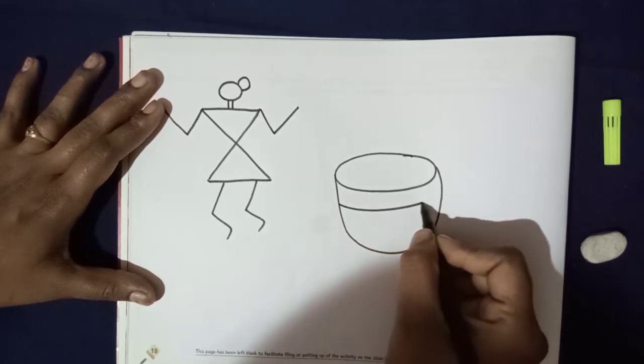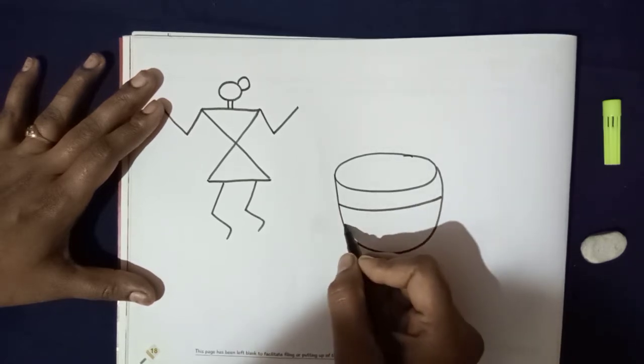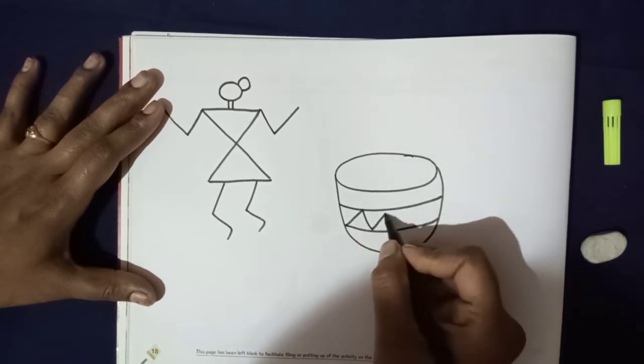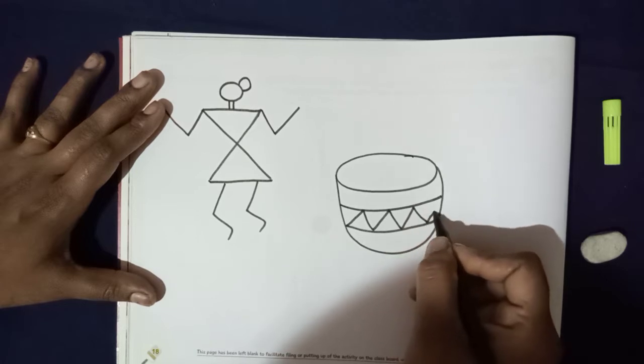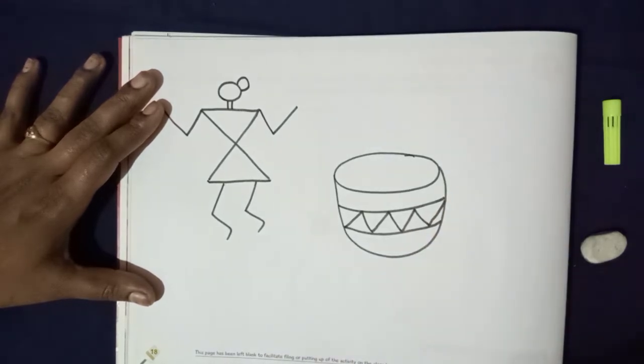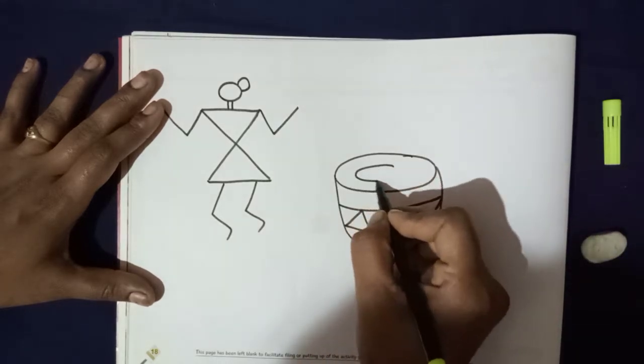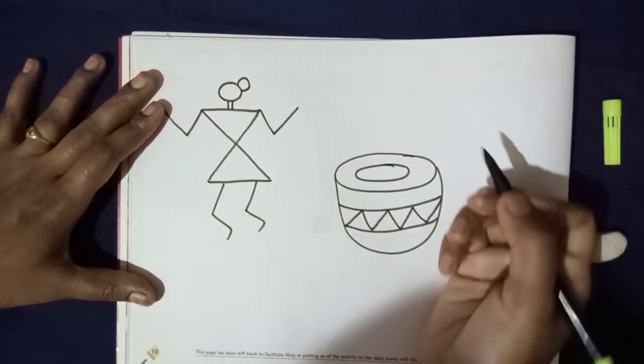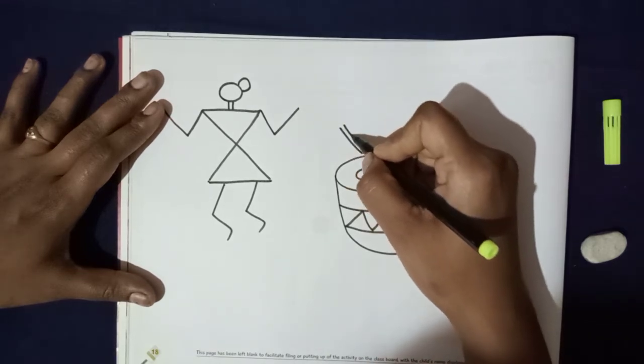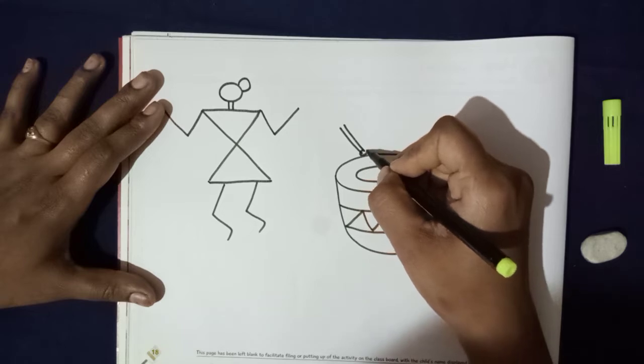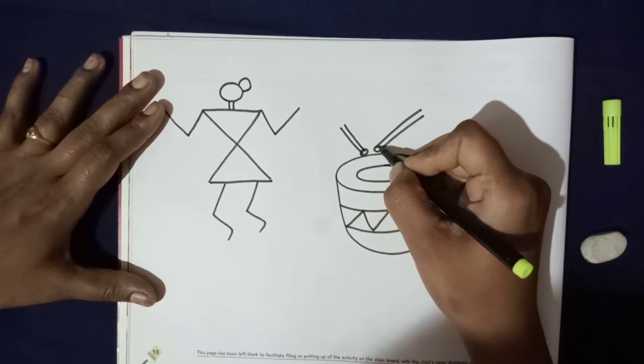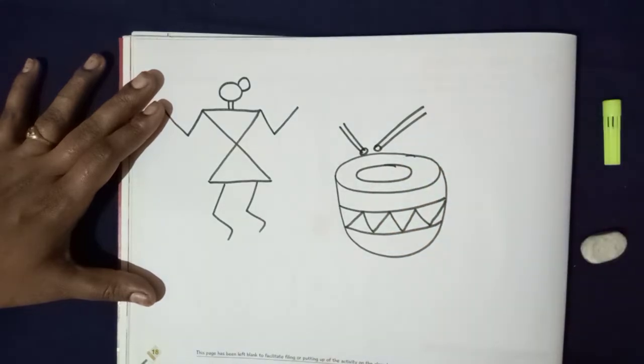And inside this, you can draw anything. Use your imagination children. Aap jo chahte ho, wo aap draw kar sakte ho. Yahan pe, aap ke marzi. Like this. Now I will draw two drum sticks. Like this.